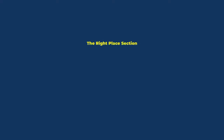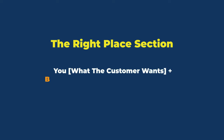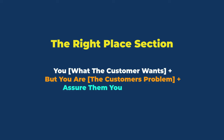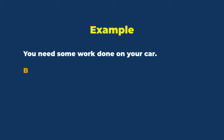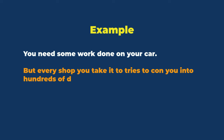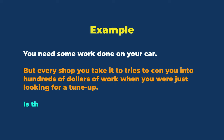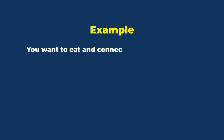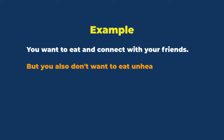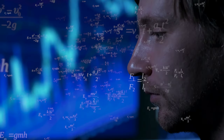First, we have the 'right place' section. This lets visitors know they've landed in the right place. Here's the template: state what the customer wants, state what their problem is, and assure them you can relate. Here's an example: 'You need some work done on your car, but every shop you take it to tries to con you into hundreds of dollars of work when you were just looking for a tune-up — is this you too?' Another example: 'You want to eat and connect with your friends but you also don't want to feel terrible from unhealthy food afterwards — can you relate?'